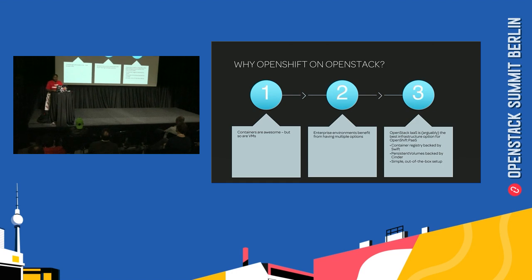Not to mention, OpenShift has a lot of integration with OpenStack, with more being added in the 3.11 release, including but not limited to Swift backing, persistent volumes with Cinder, and Keystone authentication — so you don't have to manage users separately in your OpenShift environment and your OpenStack environment — as well as a pretty simple out-of-the-box setup, which I am going to demo right over there if you care to check it out.